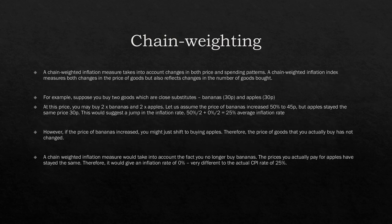Another method we use to calculate inflation is chain weighting. Chain weighting takes into account changes in both price and spending patterns, which helps guard against substitution bias in the markets by considering that people have shifted from relatively expensive goods.